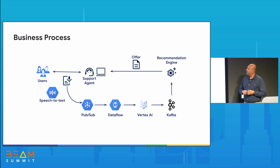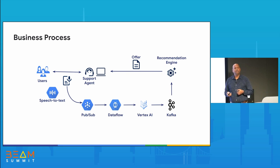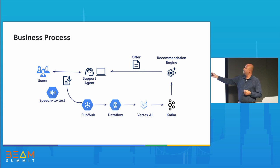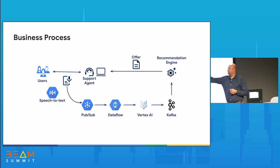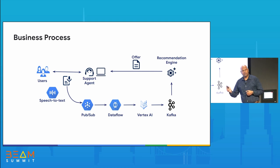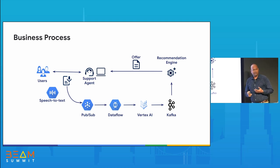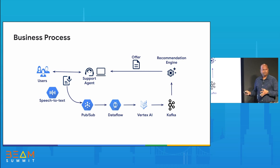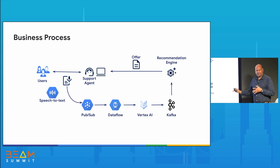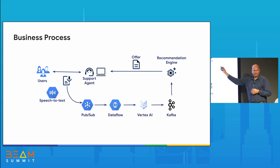The key thing to take away is that there is a customer online, so latency is very important. We need to get back with an output while the customer is still on the call. This loop has to complete in a reasonable amount of time for the overall solution to be useful. So the flow looks fairly straightforward: data comes in, process it, send it out, score it, send it back.